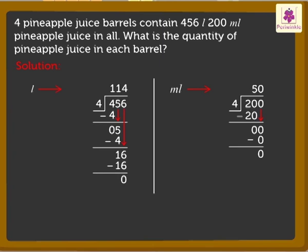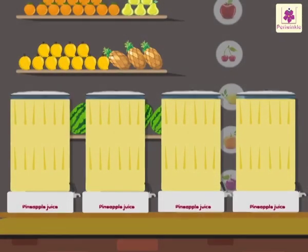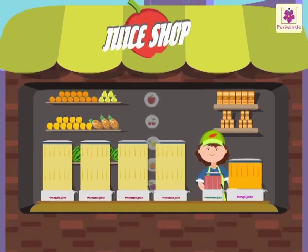Here, we got the quotient as 50 milliliters. The quotient is 114 litres, 50 milliliters. Look, we found out that each barrel contains 114 litres, 50 milliliters of pineapple juice. Wow! We calculated and also had fun at Jani's juice shop.